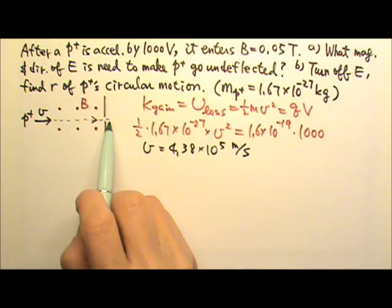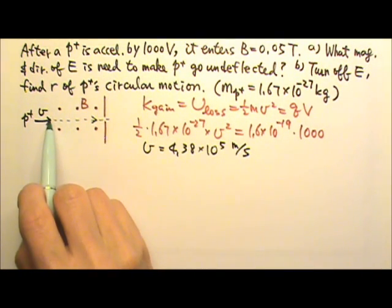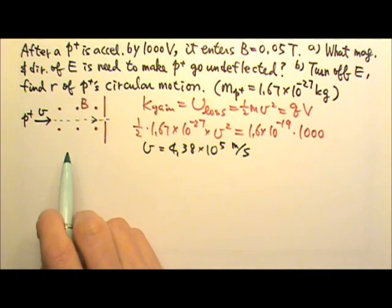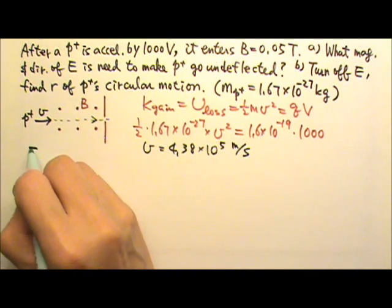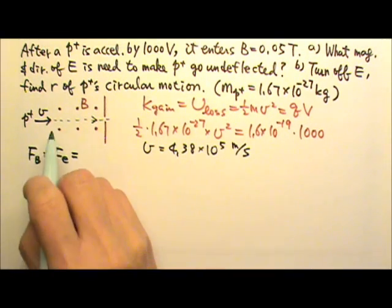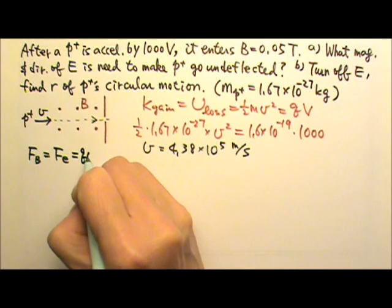Because the proton beam goes straight and undeflected, that means the electric force and the magnetic force must be equal and opposite so they can cancel. So the magnetic force equals the electric force. The magnetic force is qvB.